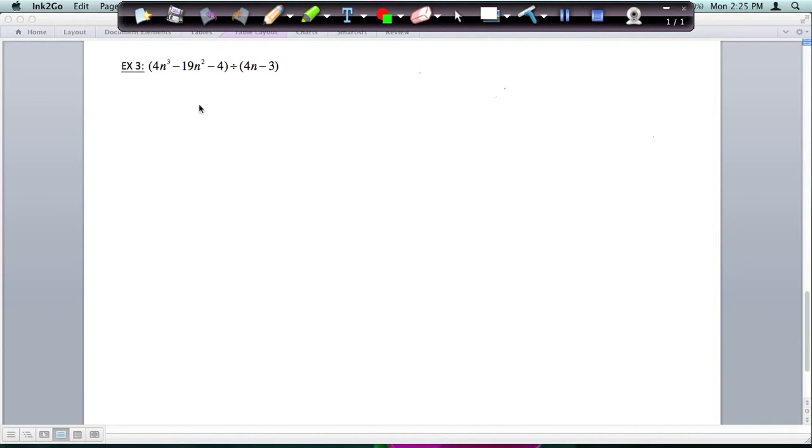First example, so I'm going to divide 4n minus 3 into this polynomial. Remember I said they need to be in descending order, and I have an n cubed and I have an n squared term, but I don't have an n term. So I'm going to have to put a place value in here, and you'll see when we subtract why we need it.